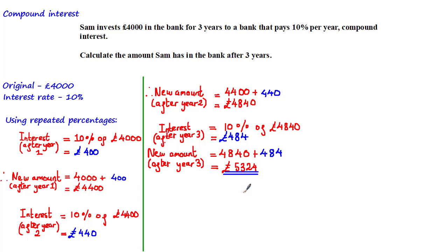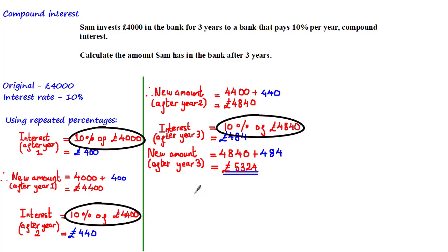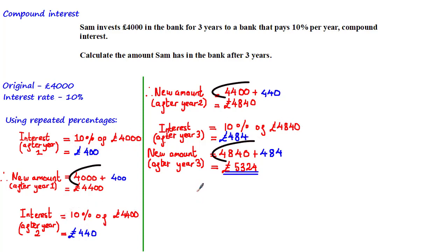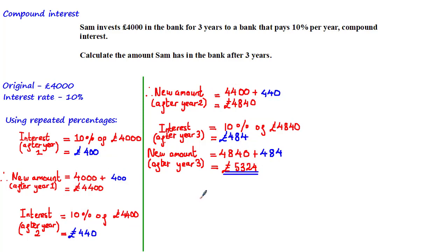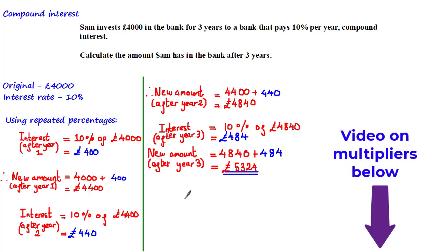For non-calculator questions this method works well, but with a calculator there's a much quicker approach. Taking 10% of each amount and adding it to the current amount is the same as increasing by 10%, so instead we can use multipliers, which is a much quicker way to increase an amount by a percentage.